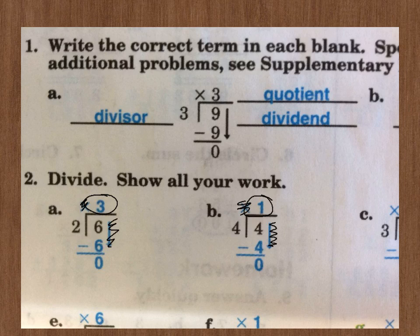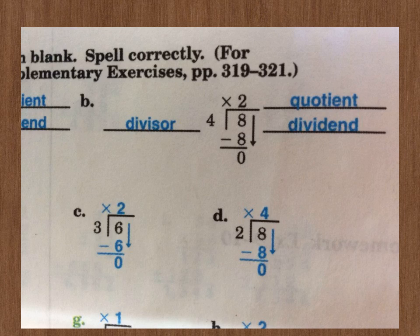C. Three goes into six two times. Two times three is six. So, we subtract six, and we get zero. Our answer is the two.